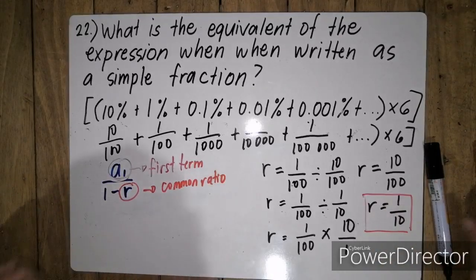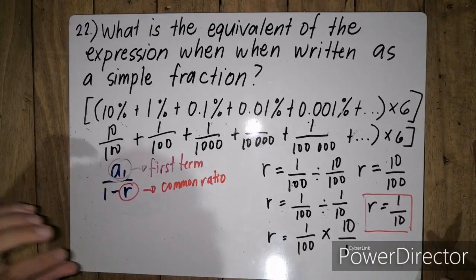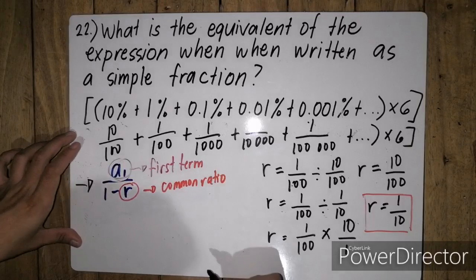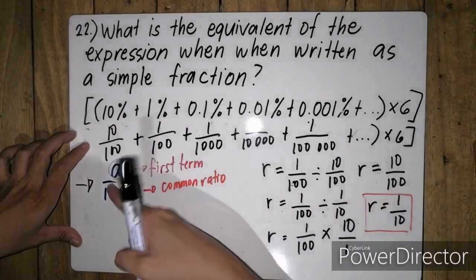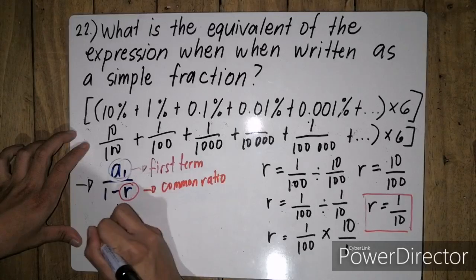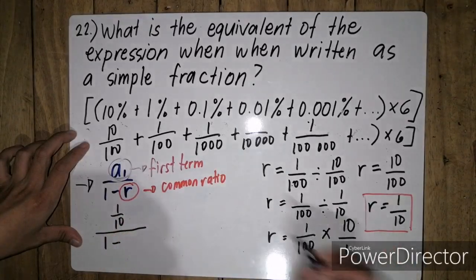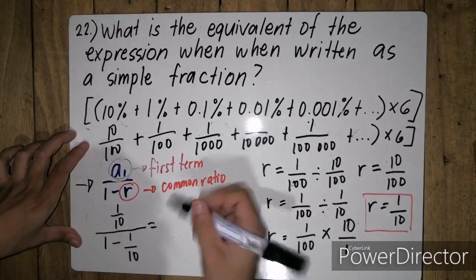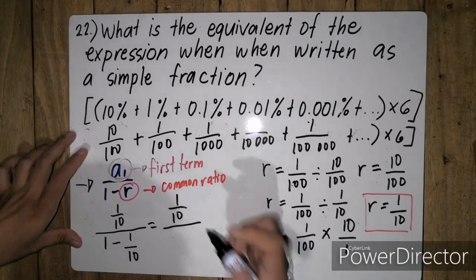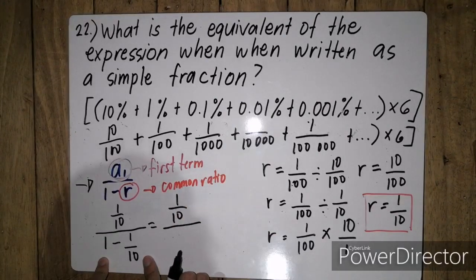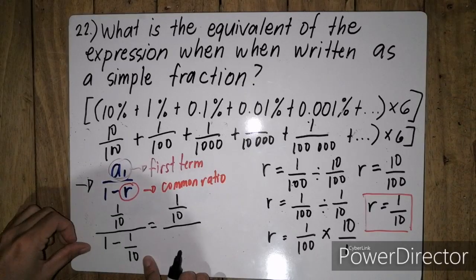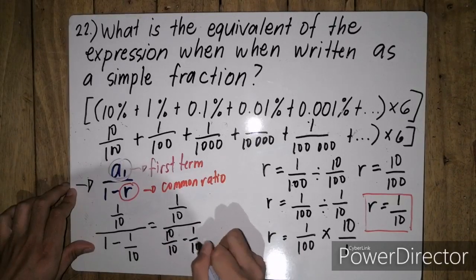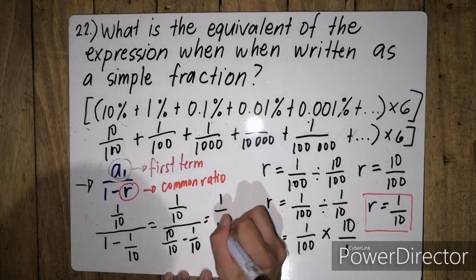Since alam na natin yung ating r, we are now going to proceed with the formula. So our a sub 1 is 10 over 100, or simply 1 over 10. So the formula gives us 1 over 10 divided by 1 minus 1 over 10. We can transform 1 as 10 over 10 minus 1 over 10, so that's simply equal to 1 over 10 in the numerator.